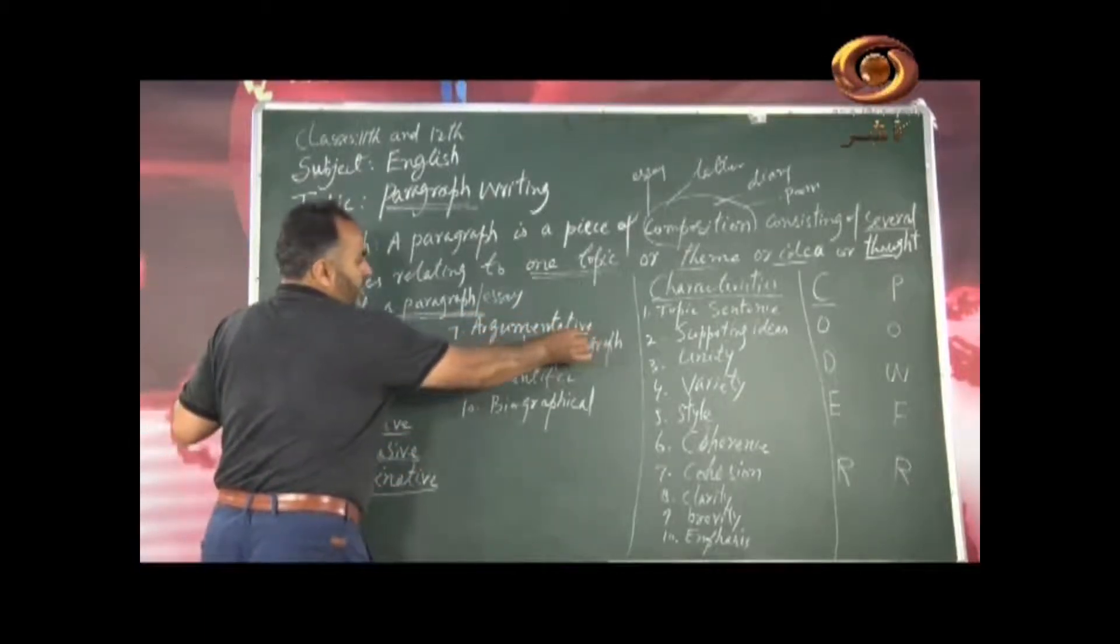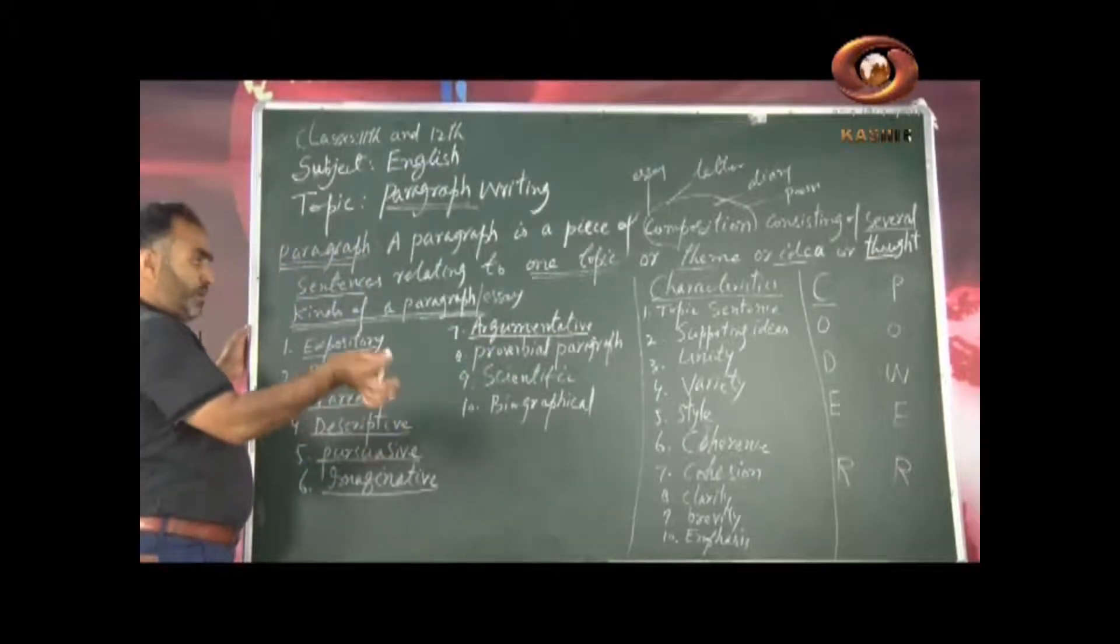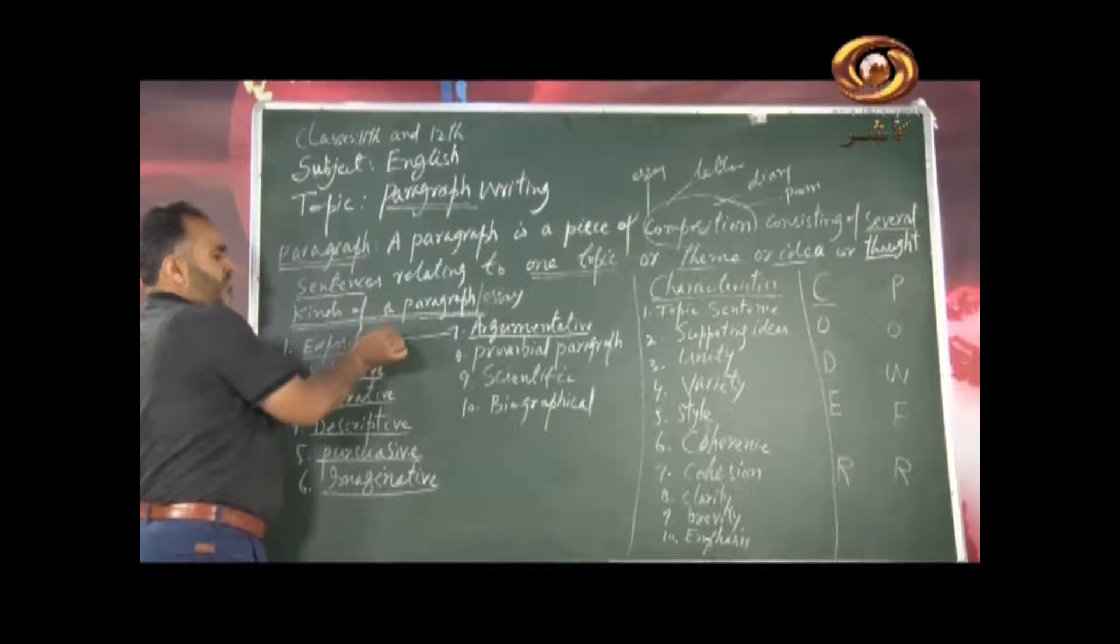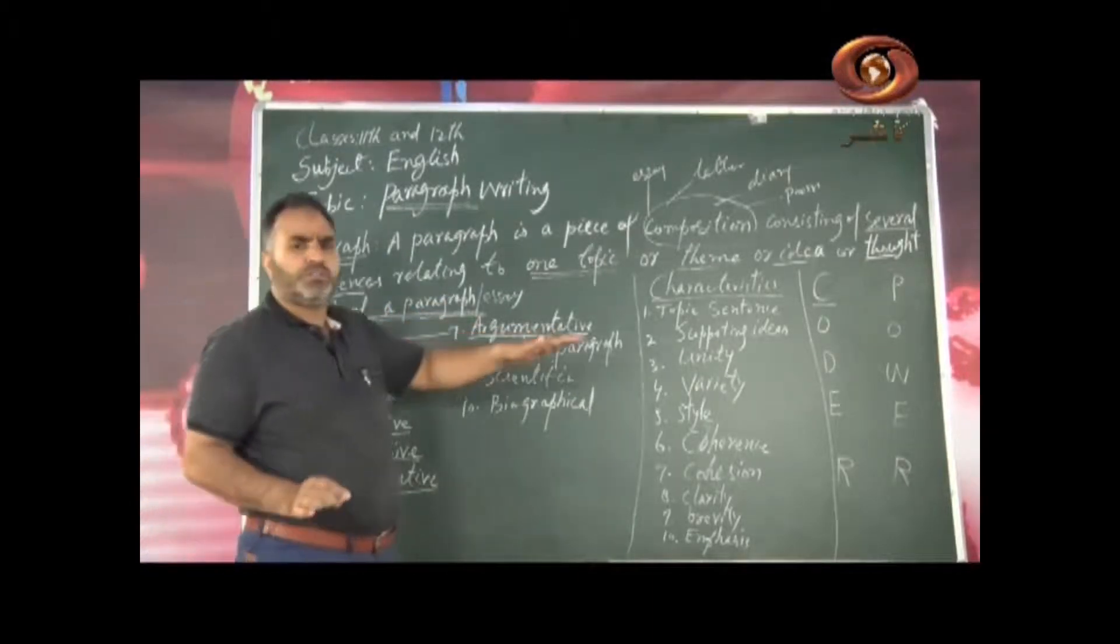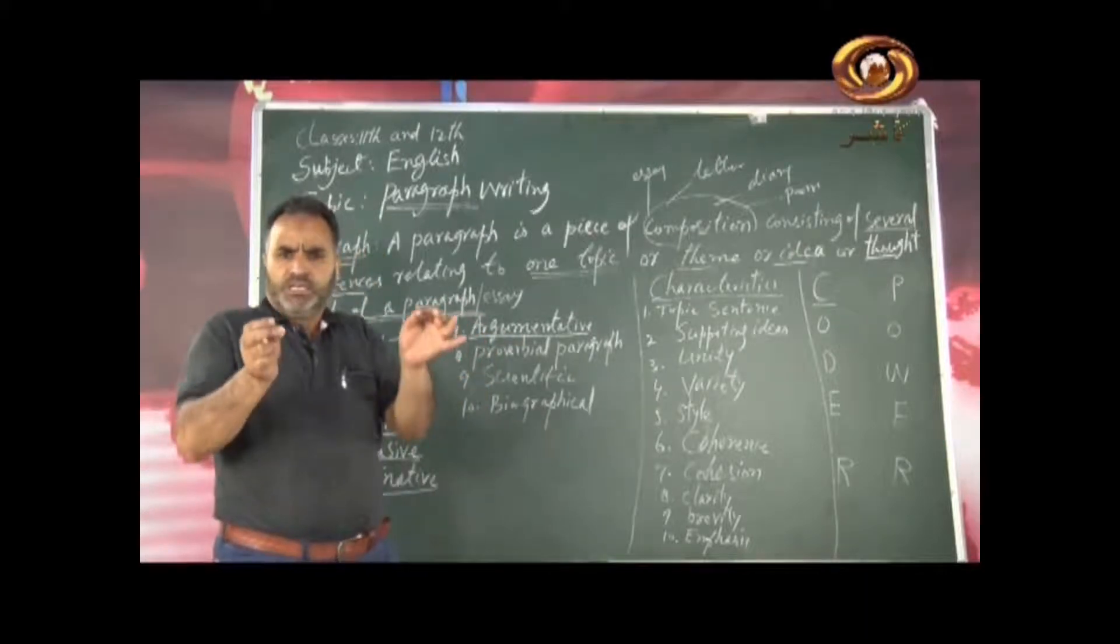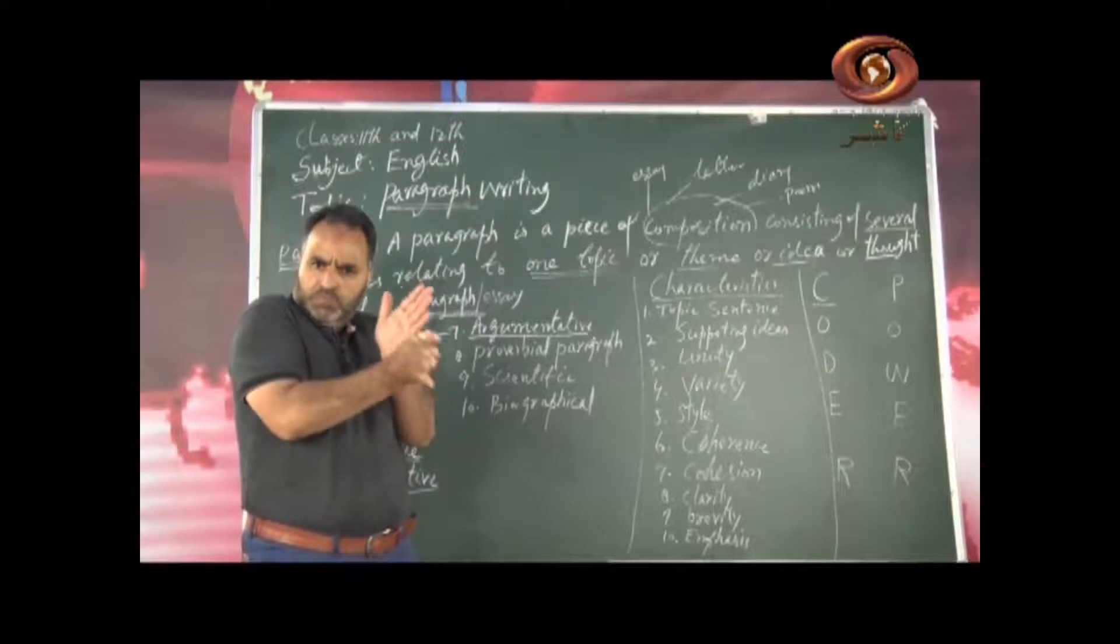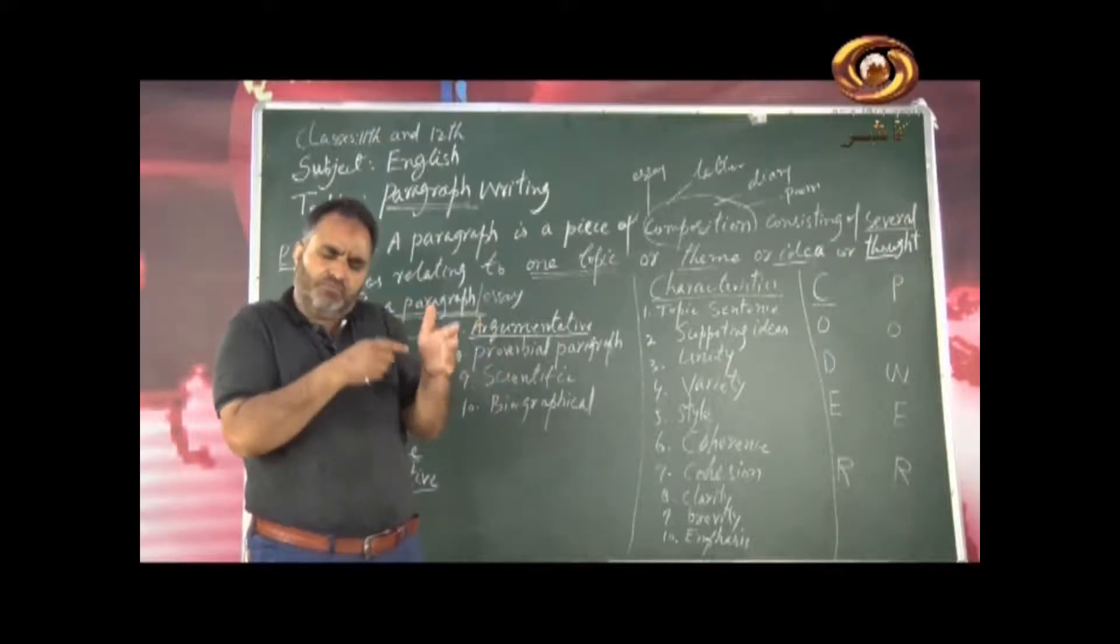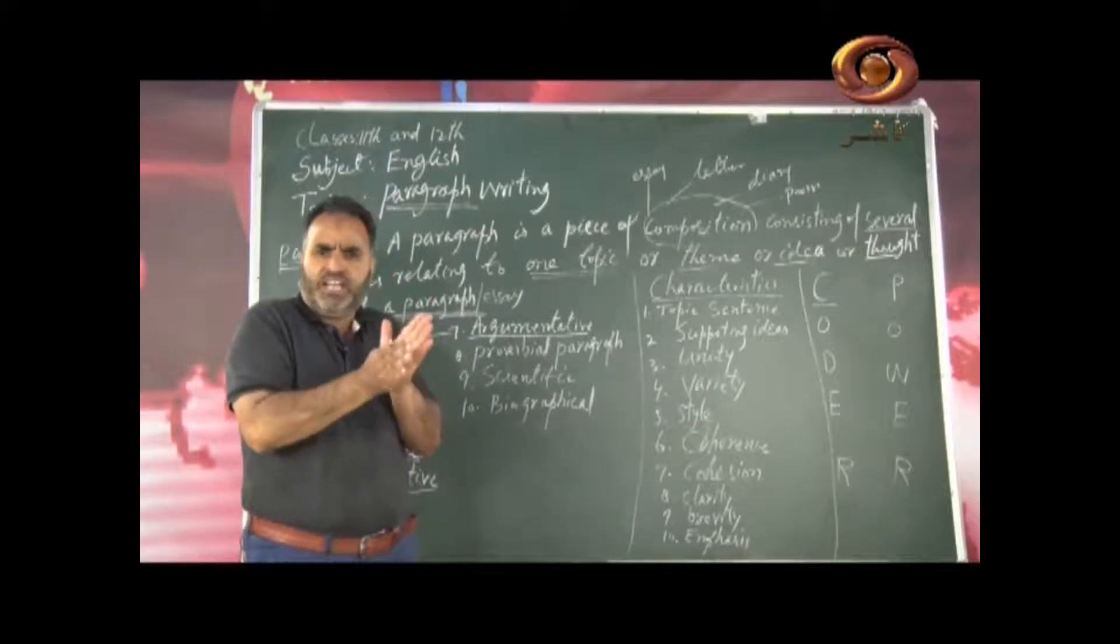Then there is argumentative. Argumentative paragraph is like expositive type of paragraph. But the difference is that in argumentative paragraph, what you do is that you take some side. That means you are in favor of something and while writing you are opposing something. That is argumentative. You take sides.